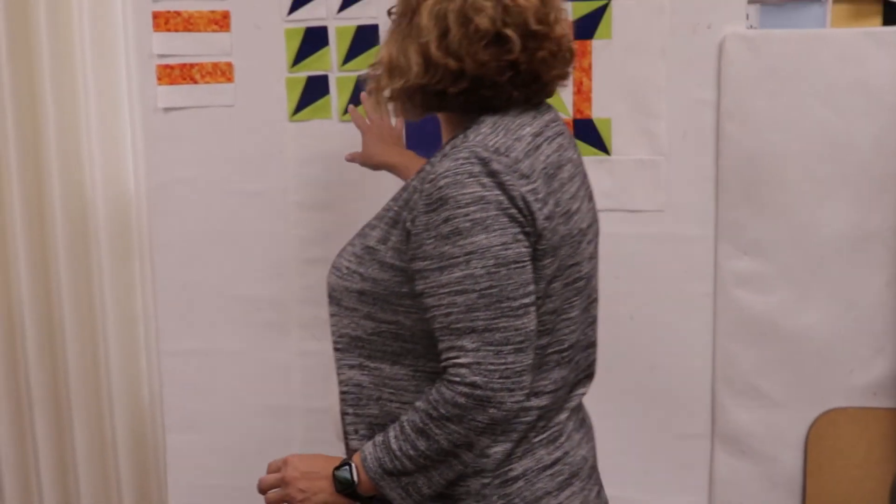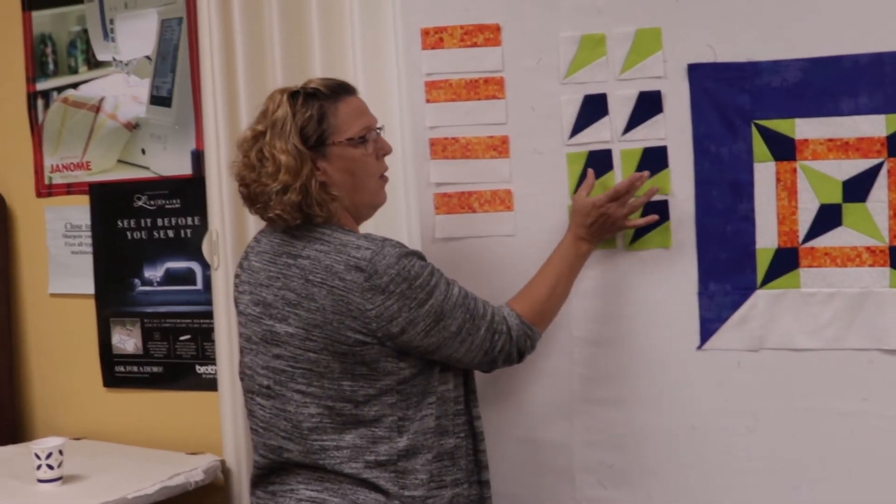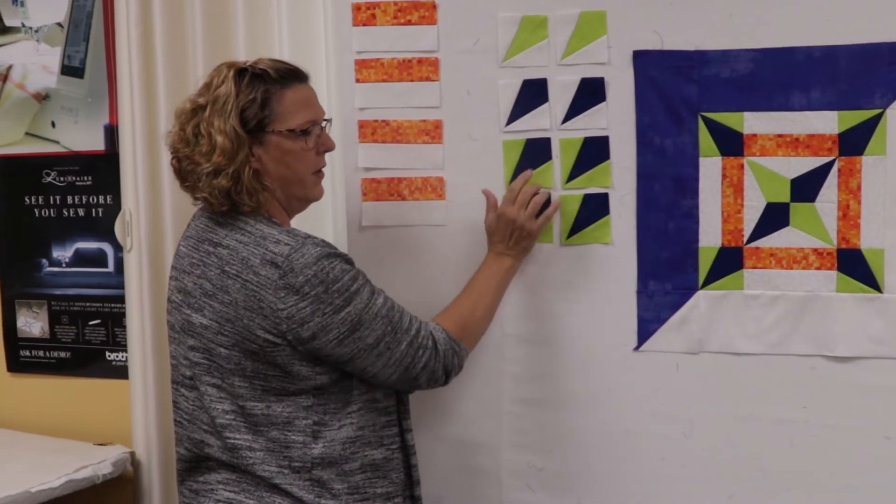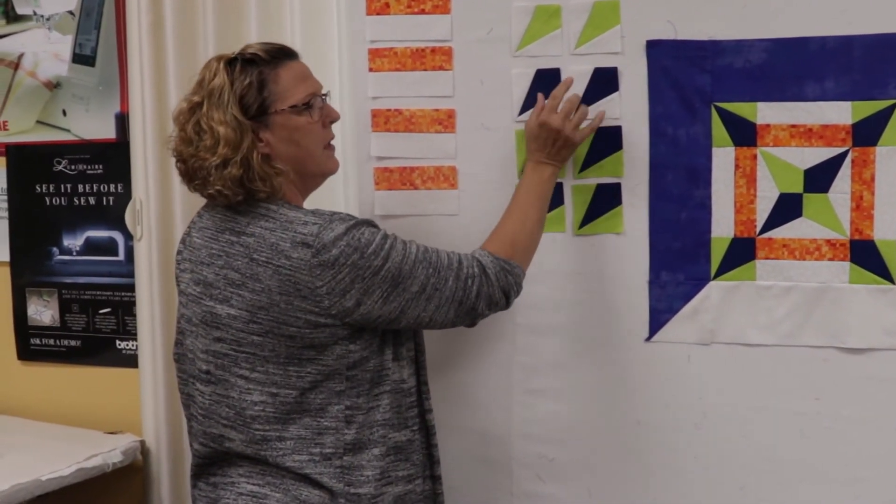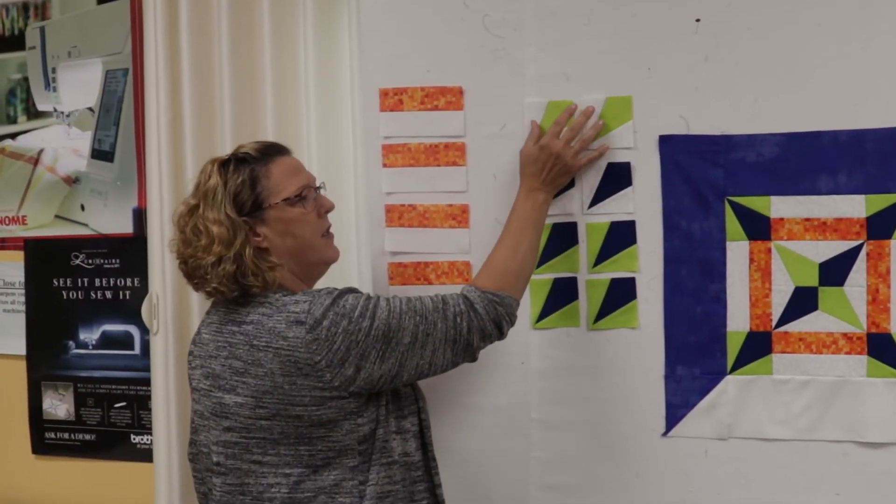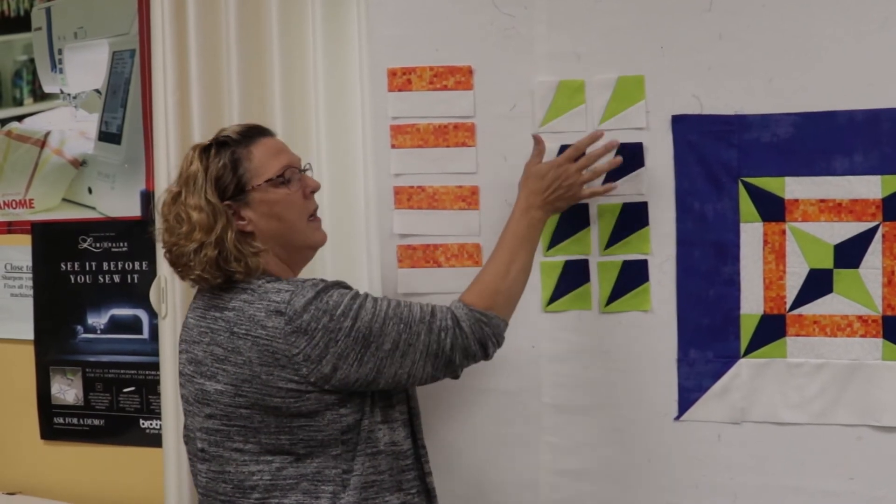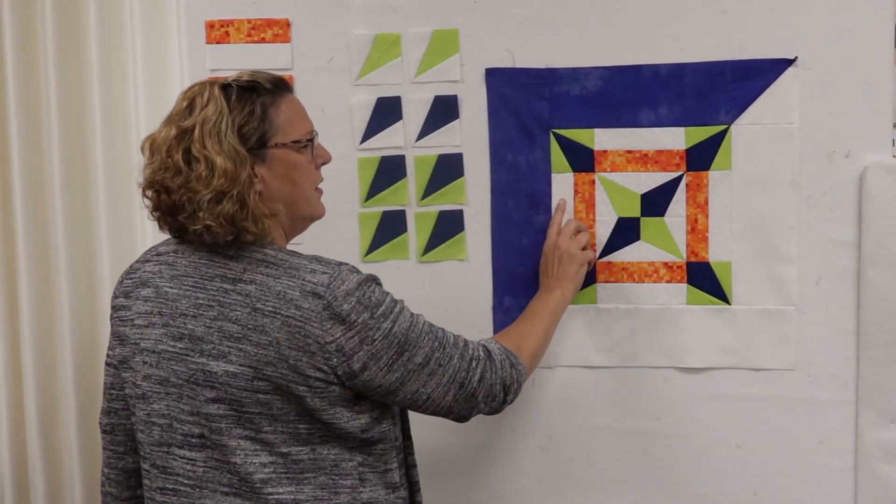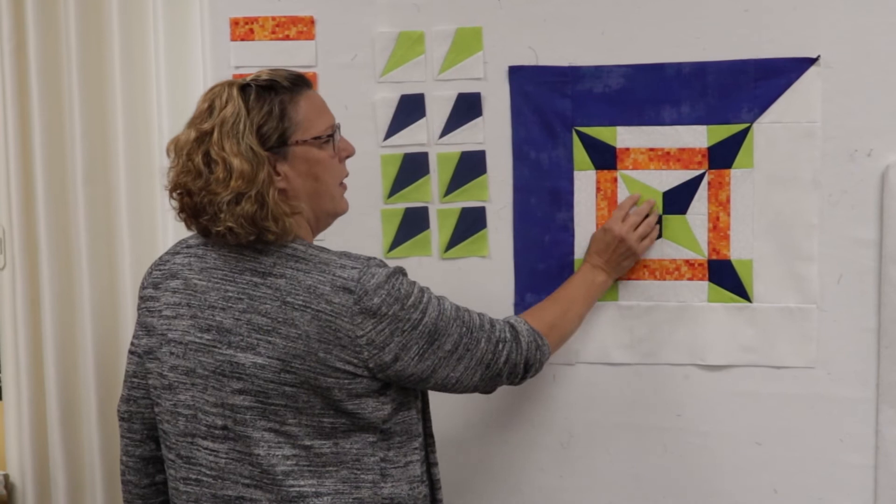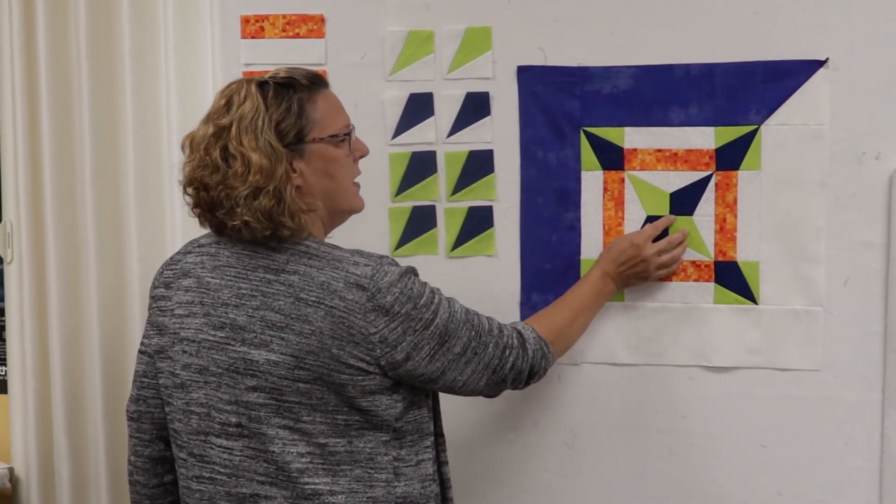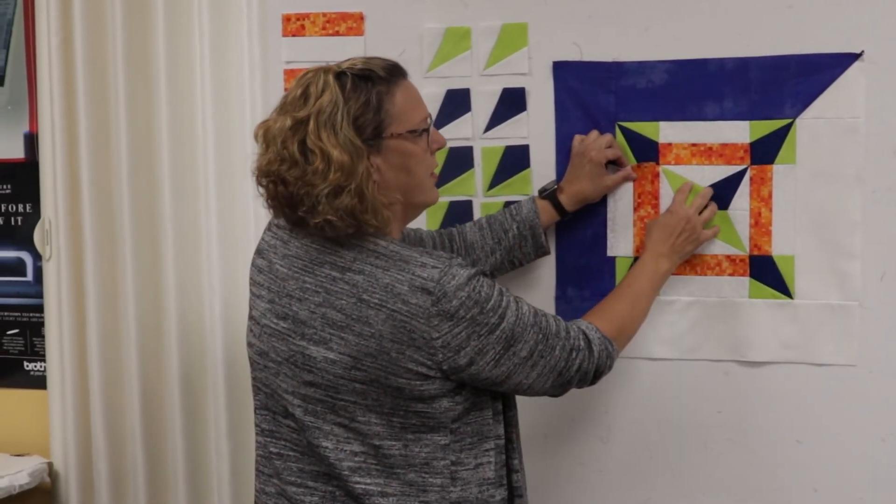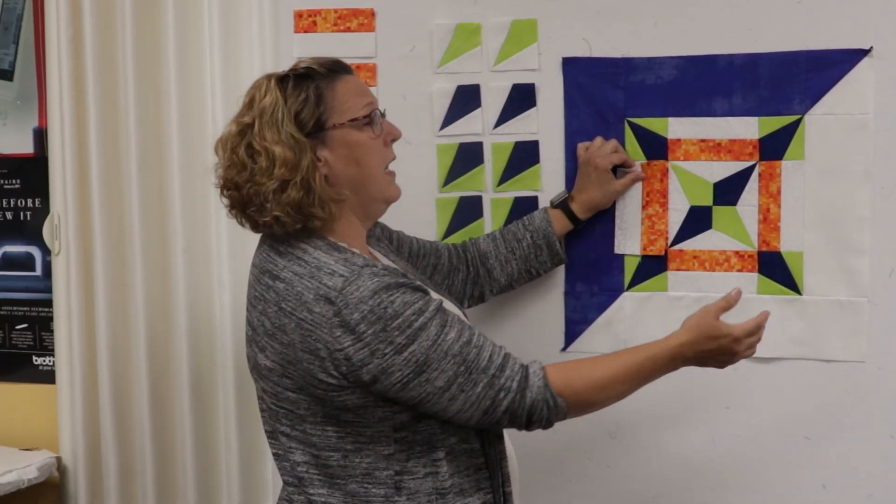So once we get those all done, like I said, we're going to need four of our A blues have all the greens for the B's. So you can get all those done. Two of the blues have those rectangles that are the whites and two of the green also have the two rectangles that are white. So these are our units and then we're simply, we're just going to use our directions to put our block together. First thing we want to do is create our center so that we can sew our sides to our center piece. And it basically becomes a nine patch.